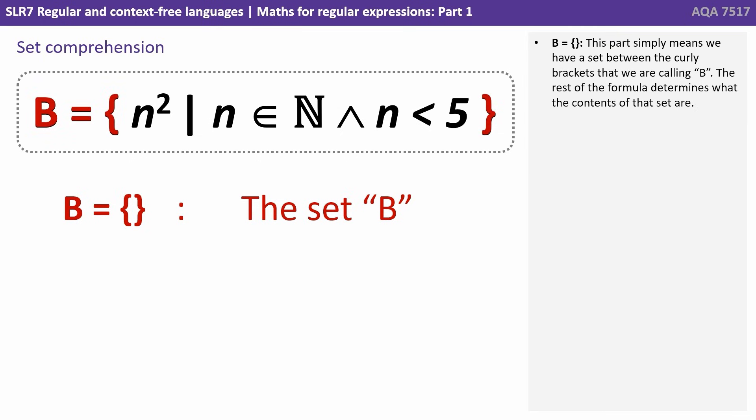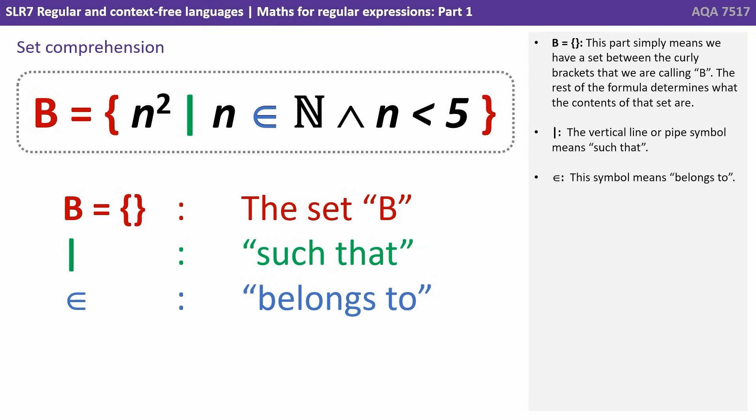The B equals curly brackets. This part simply means we have a set between the curly brackets that we're calling B. The rest of the formula determines what the contents of that set are. The vertical line or pipe symbol means such that. The weird looking E symbol means belongs to. And the little pyramid or caret symbol means and.